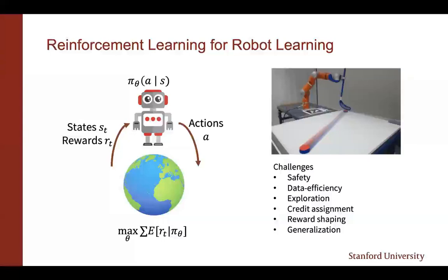And finally, generalization. You'd expect a policy learned in one setting to also work in a different setting. But because of the lack of data and the need to collect more online samples to learn a policy, achieving generalization for robotics in deep reinforcement learning settings is a very challenging goal.